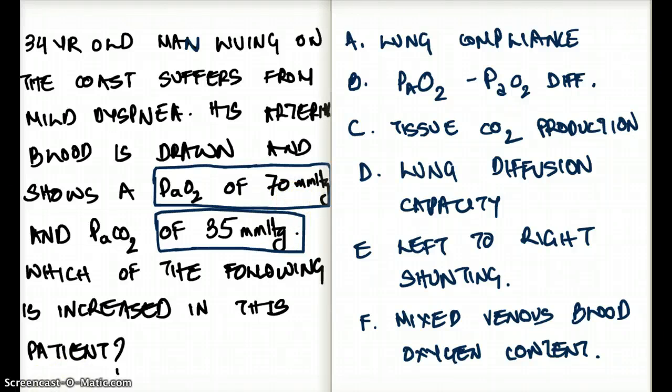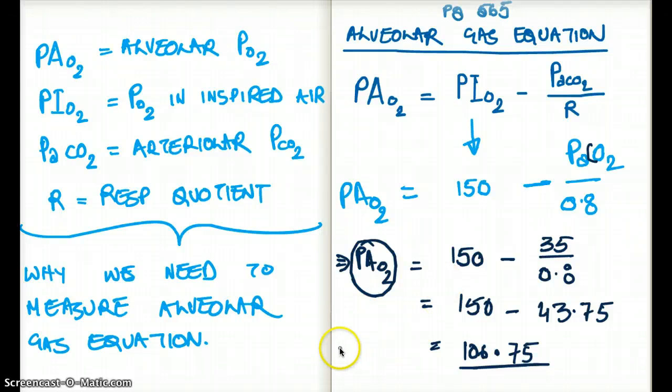What is the normal A-a gradient? The normal A-a gradient should not be more than 10 to 15 millimeter mercury. And we are having a difference of about 36 millimeter mercury. So the A-a gradient is really largely different.